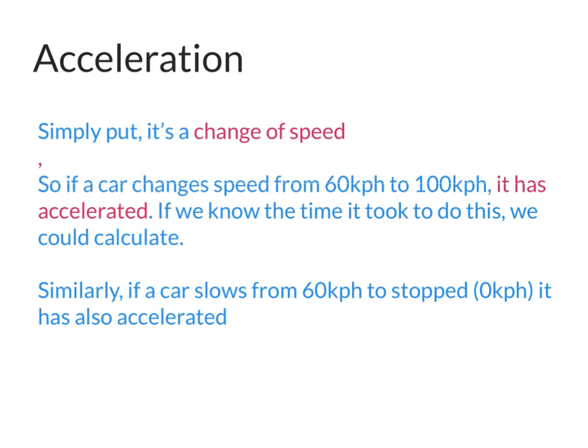For cars travelling from 60 to 100 kilometres per hour — the speed has changed, it's risen by 40 kilometres per hour, so it has accelerated. But the same thing applies if a car has to go from 60 kilometres per hour to zero — in other words, it's going to stop. The speed has changed, and it took a certain amount of time to do so, so we can work out how much acceleration happened.